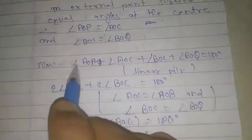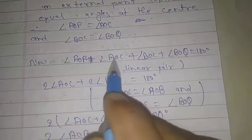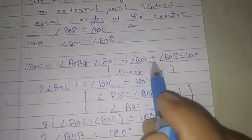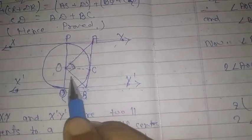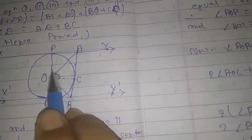Now, angle AOB plus angle AOC plus angle BOC plus angle BOQ equals 180 degrees. This means the sum of all these angles is 180 degrees because they form a linear pair at a straight line.